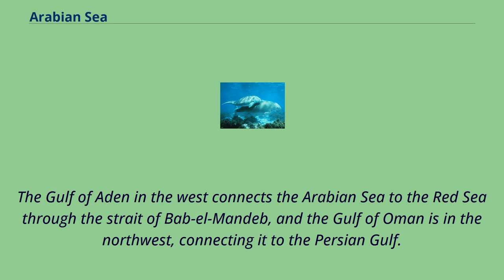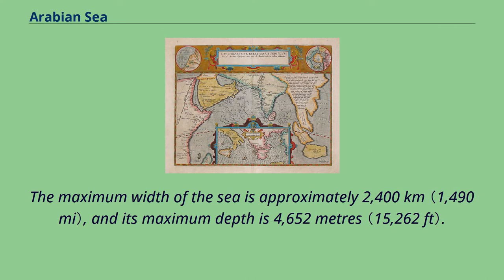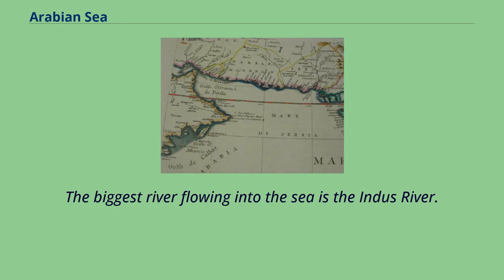The Gulf of Aden in the west connects the Arabian Sea to the Red Sea through the Strait of Bab al-Mandeb, and the Gulf of Oman in the northwest connects it to the Persian Gulf. The maximum width of the sea is approximately 2,400 kilometers, and its maximum depth is 4,652 meters. The biggest river flowing into the sea is the Indus River.